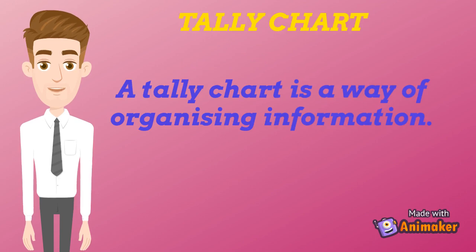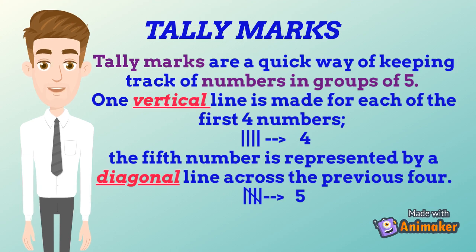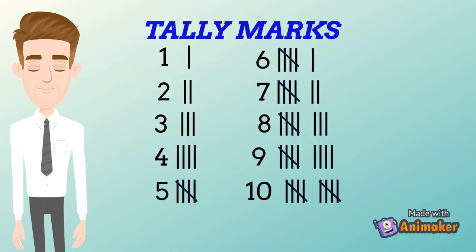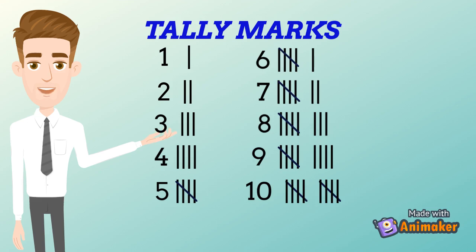A tally chart is a way of organizing information. Tally marks are a quick way of keeping track of numbers in groups of five. One vertical line is made for each of the first four numbers. The fifth number is represented by a diagonal line across the previous four.